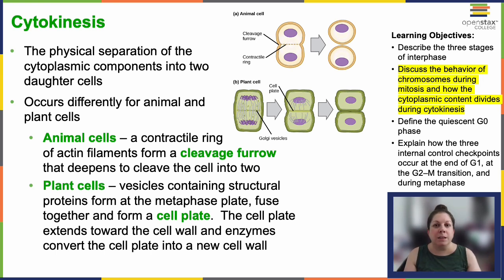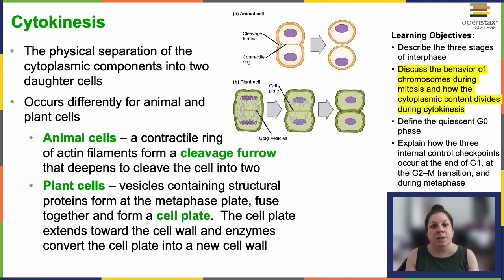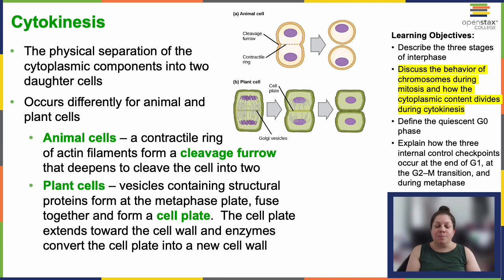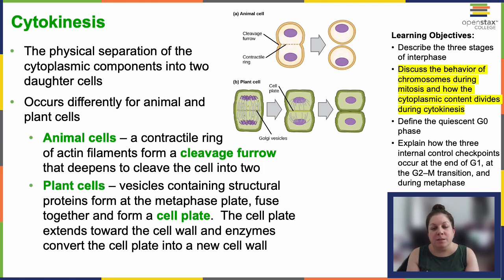Plant cells can't form that cleavage furrow because they have cell walls. Instead, the Golgi apparatus accumulates all needed materials and breaks into vesicles. In telophase, these vesicles move to the metaphase plate and fuse, forming a new cell plate right in the middle. As the plate enlarges, it merges with the cell wall's periphery. So rather than splitting two cells apart, plants basically build a new cell wall and membrane in between. Enzymes use stored glucose to create the new cellulose cell wall, and Golgi membranes become the new plasma membrane on both sides.